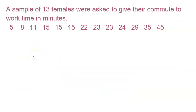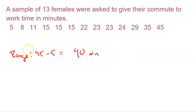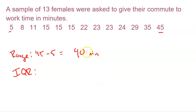Here is an example with actual data. Thirteen females were asked to give their commute times to work in minutes. To find the range: we don't have a special symbol for range — we just take 45 minus 5, giving a 40-minute range. That's a fairly decent spread: 5 minutes is a pretty short commute and 45 minutes is a long one.